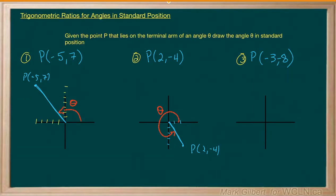Let's try the last one here: negative 3, negative 8. There we go, negative 3, negative 8. There's the arm, and here's my angle theta in standard position.